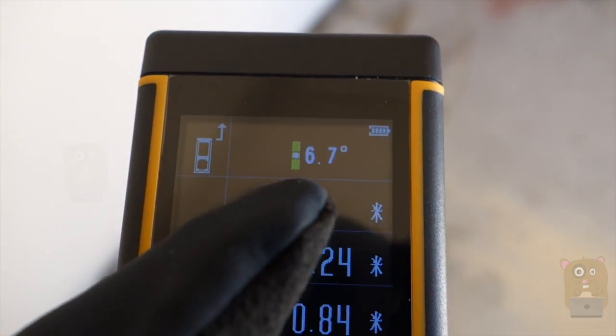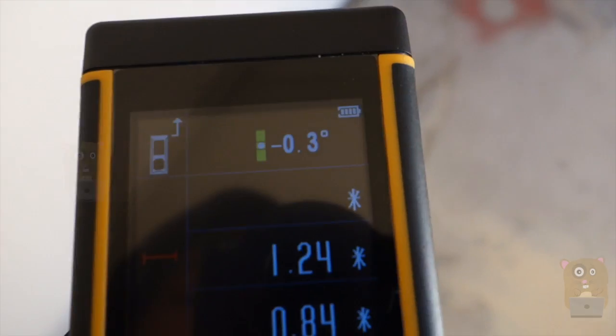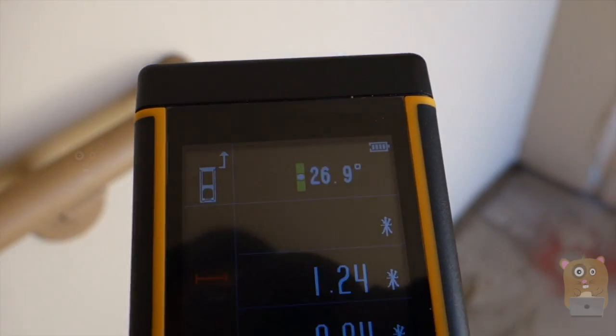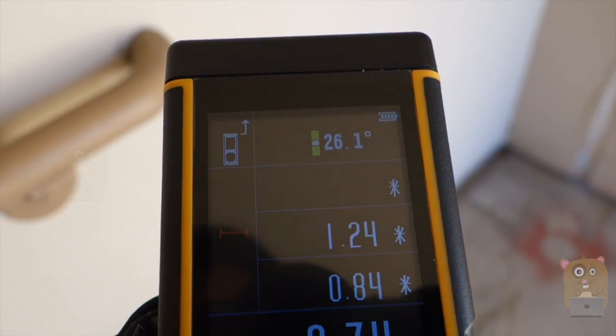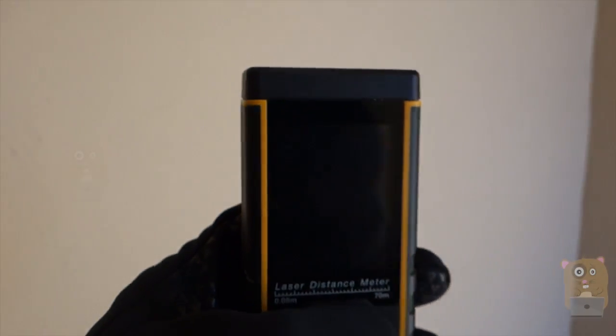Another cool feature about this is the electronic leveler here. So not only does it tell me if it's level horizontally, it can also tell me at what angle I currently have it placed at. So currently it's at 26 degrees, I can keep changing it to 52, even at 90 degrees if I wanted.